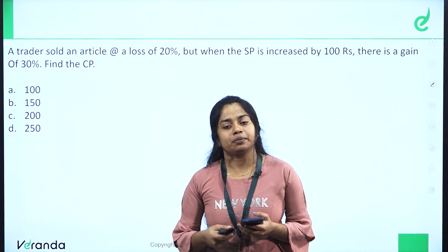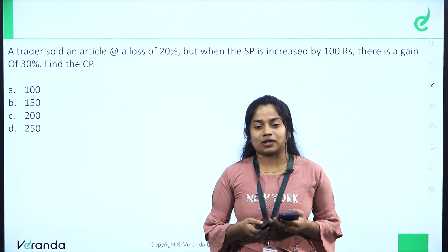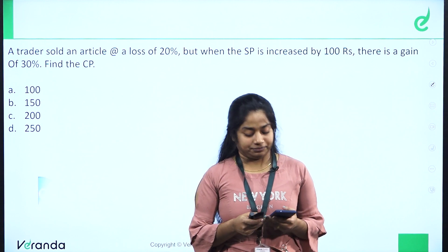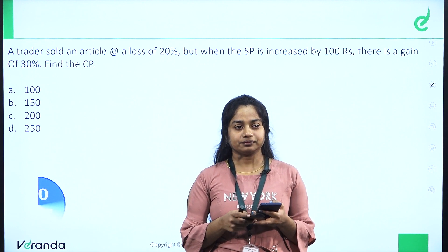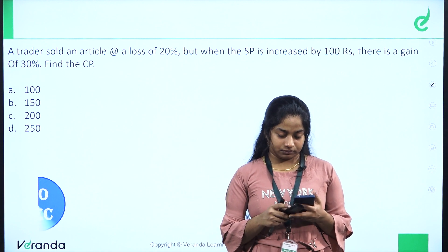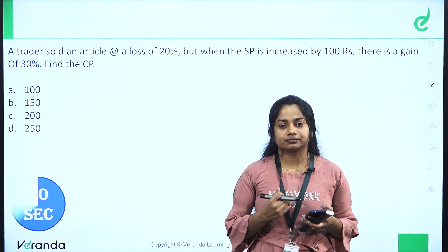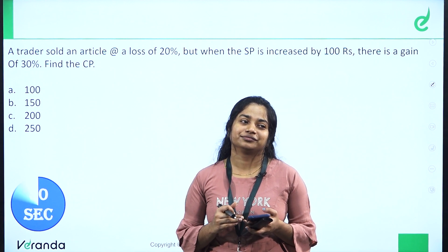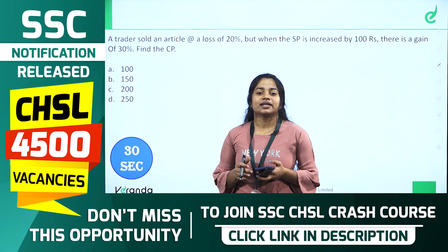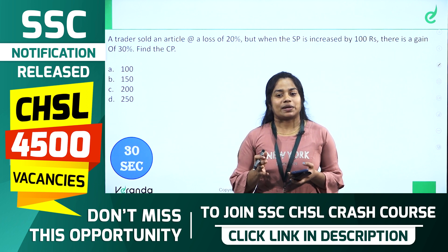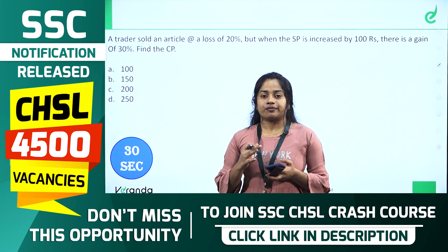This question is similar to another question. Question 3: A trader sold an article at a loss of 20%. But when the Selling Price is increased by 100 rupees, there is a gain of 30%. Find the Cost Price.